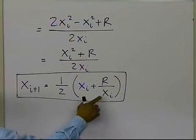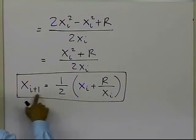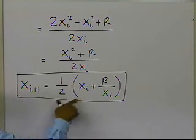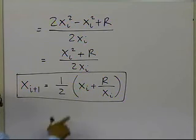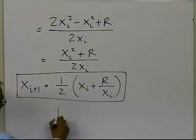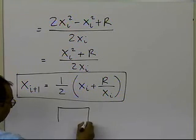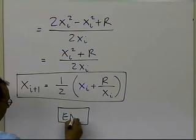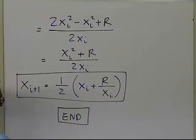You're going to choose something as an initial guess, then find out the new guess, and keep on doing this iterative process. In the next segment, I'm going to show you an example of applying this formula. And that's the end of this segment.